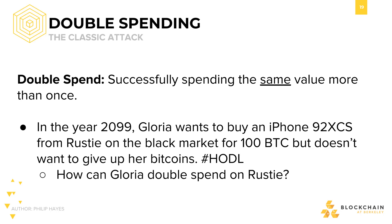Imagine this scenario. In the year 2099, I'm an old lady and I want to buy the new iPhone, let's say 92X, from Rusty on the black market. I'm offering a whopping 100 bitcoins, but I don't actually want to give up my money. So how can I double spend on Rusty? Well, it all depends on how early Rusty is willing to give me the iPhone.